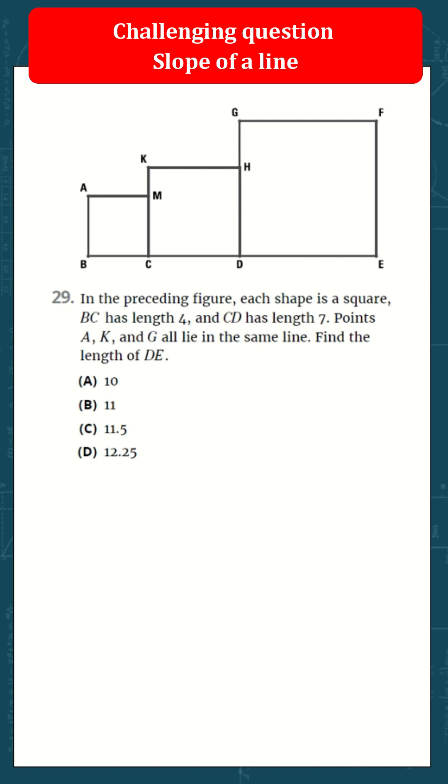In the preceding figure, each shape is a square. BC has a length of 4, and CD has a length of 7.